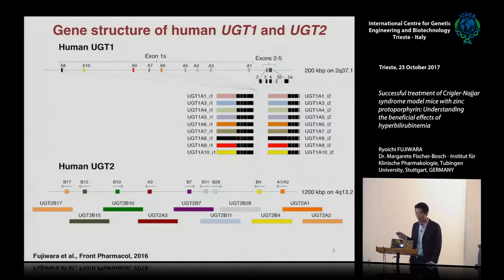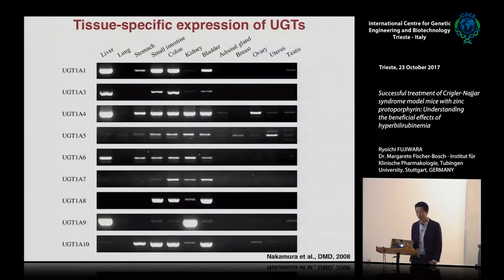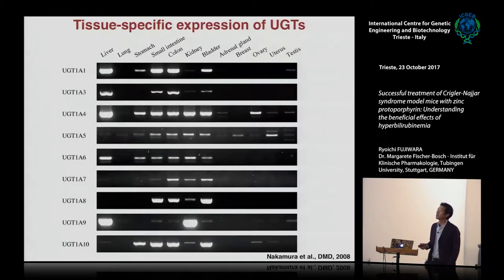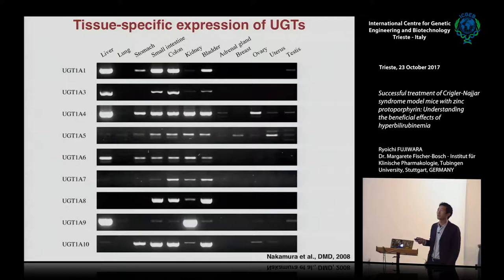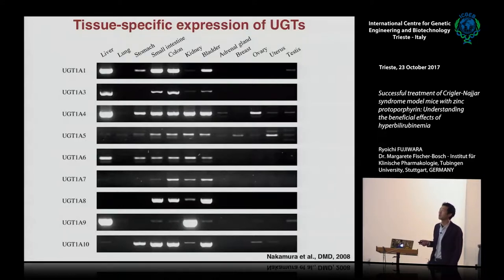Today I'll be more focusing on UGT1a1, because UGT1a1 is a very important isoform for bilirubin glucuronidation. Including UGT1a1, other isoforms are expressed everywhere in the body, but mostly in the liver, because the liver is a very important tissue for metabolism — not only for bilirubin or drugs, but any kinds of metabolism usually happen there. UGTs are also expressed in other tissues such as small intestine, stomach, colon, kidney, and brain.